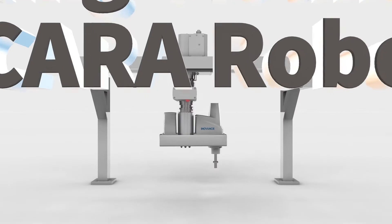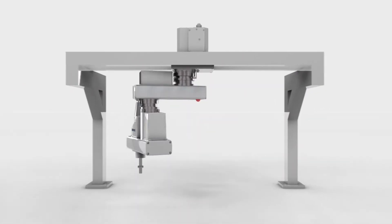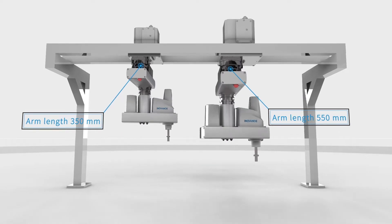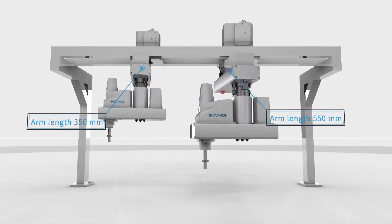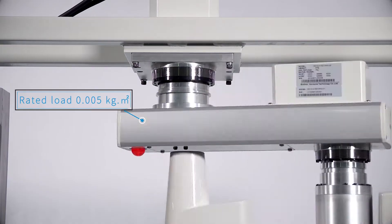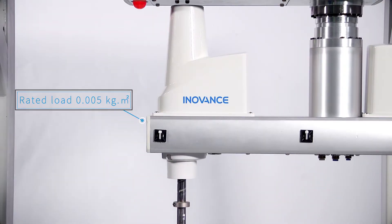Our IRS-100 series ceiling-mounted SCARA robot is designed with an arm length of both 350 and 550 mm to satisfy different work conditions. It has a 3 kg usable payload and its repeatability is within 0.01 mm.